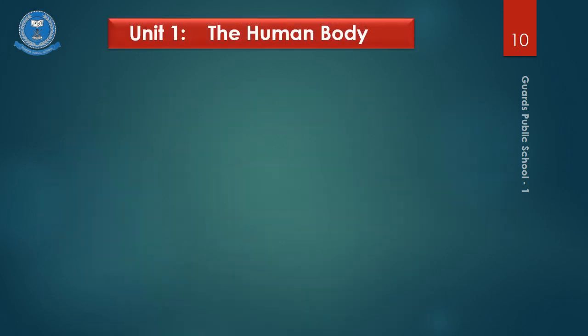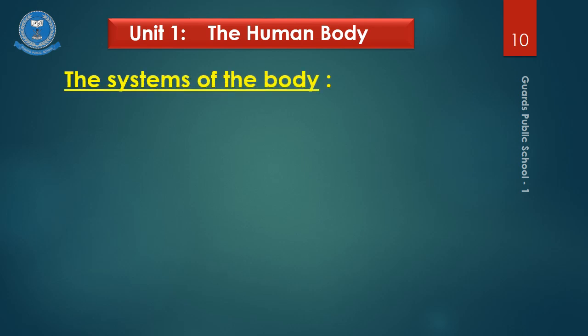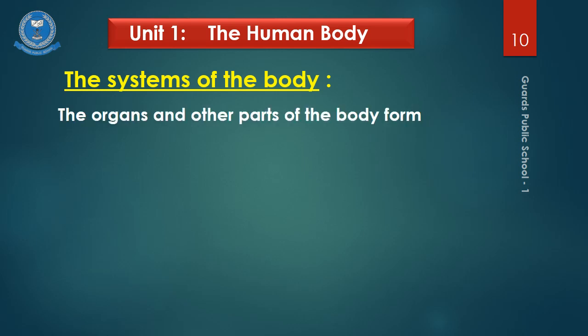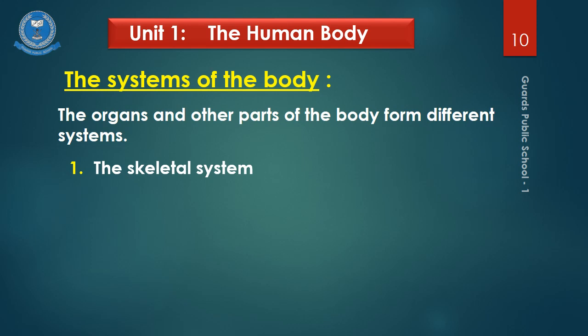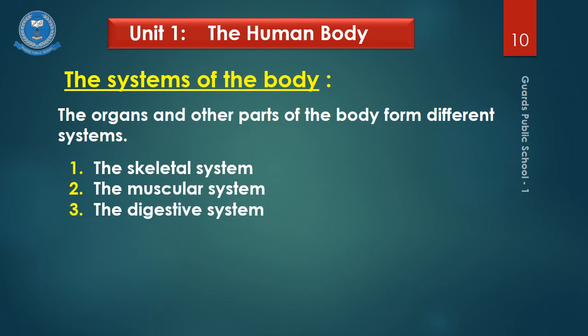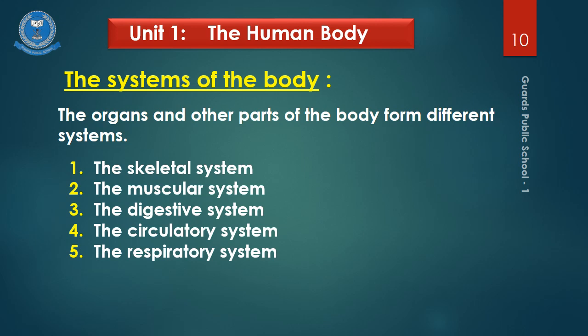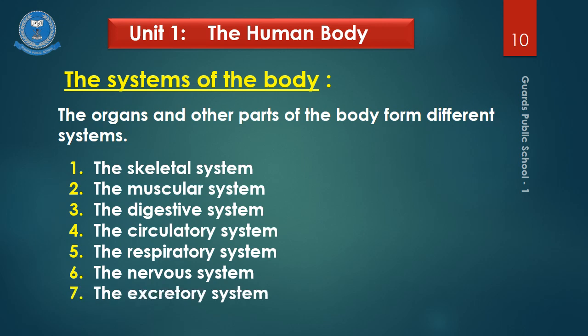Now I am going to start another topic. The organs and other parts of the body form different systems. The systems are: number 1, the skeletal system; number 2, the muscular system; number 3, the digestive system; number 4, the circulatory system; number 5, the respiratory system; number 6, the nervous system; and number 7, the excretory system.